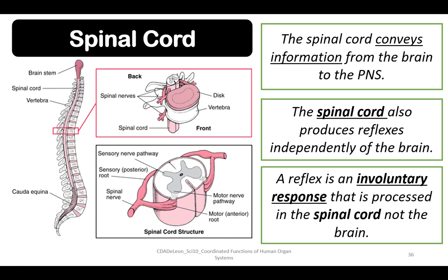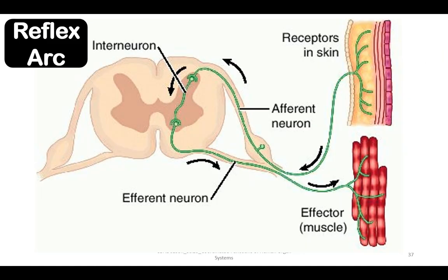A reflex is an involuntary response that is processed in the spinal cord, not in the brain. A reflex arc is an involuntary and nearly instantaneous movement in response to a stimulus. It is made possible by neural pathways called reflex arcs, which can act on an impulse before that impulse reaches the brain.